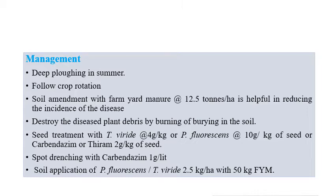For management of root rot, deep ploughing in summer and crop rotation along with soil amendments like farm yard manure at 12.5 tonnes per hectare is helpful in reducing disease incidence. Destroying and burning infected plant stubbles is also recommended. Seed treatment with Trichoderma viride at 4 g per kg of seeds, or Pseudomonas fluorescens at 10 g per kg of seeds, or Carbendazim at 2 g per kg of seeds is recommended. Soil drenching with Carbendazim at 1 g per liter and soil application of Pseudomonas fluorescens or Trichoderma viride at 2.5 kg per hectare with 50 kg of farm yard manure is also recommended.